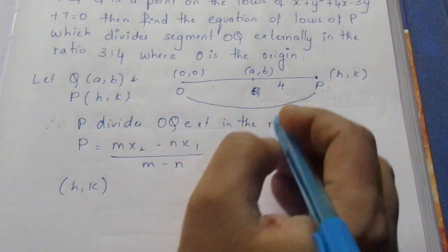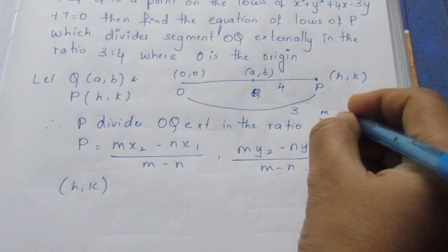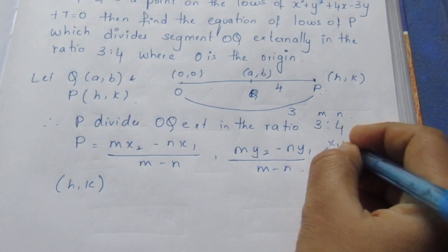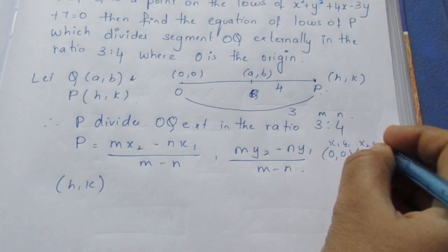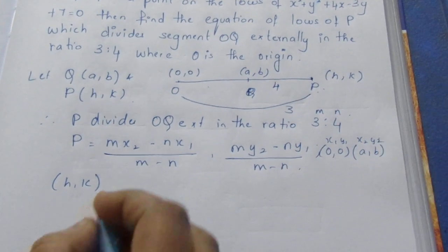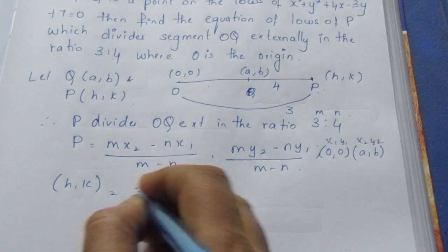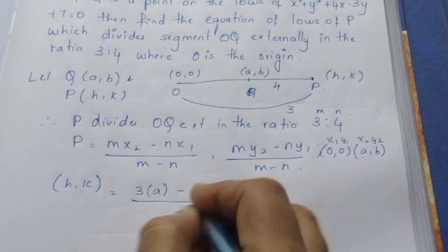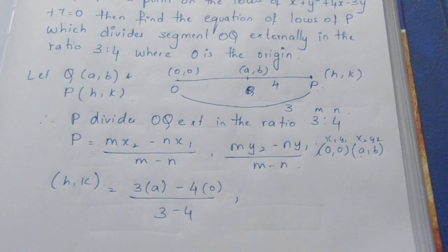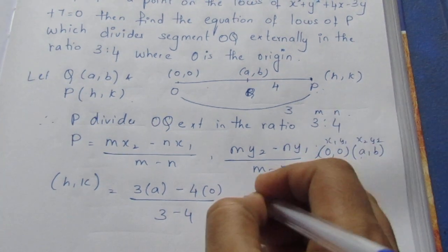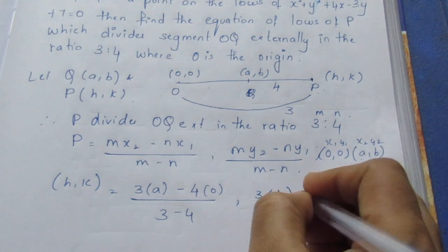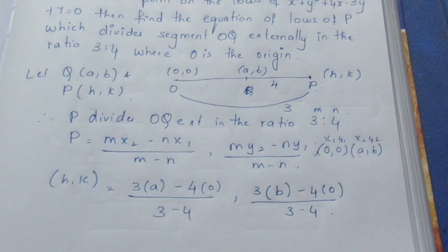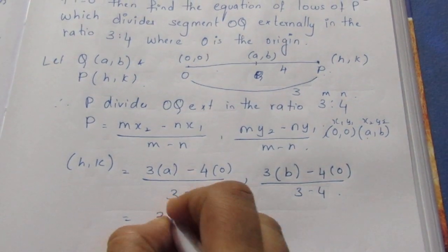If we find P value (h, k), with m and n as 3 and 4, and O is point (0, 0) as x₁, y₁, and Q is (a, b) as x₂, y₂, then substituting directly: h equals 3 into a minus 4 into 0 by 3 minus 4, and k equals 3 into b minus 4 into 0 by 3 minus 4. Solving this gives 3a by minus 1.